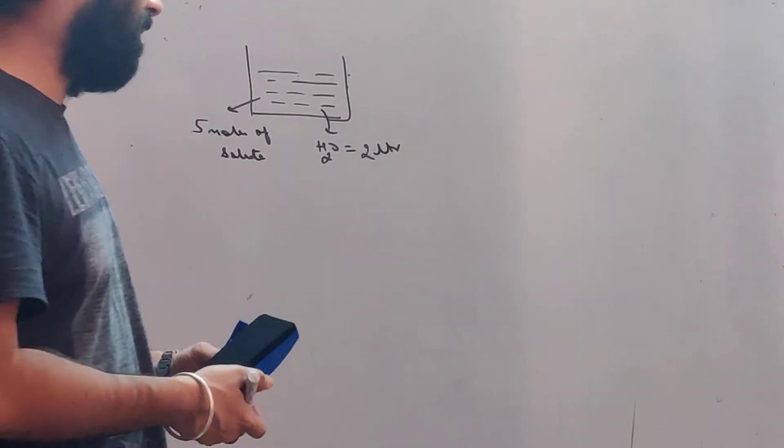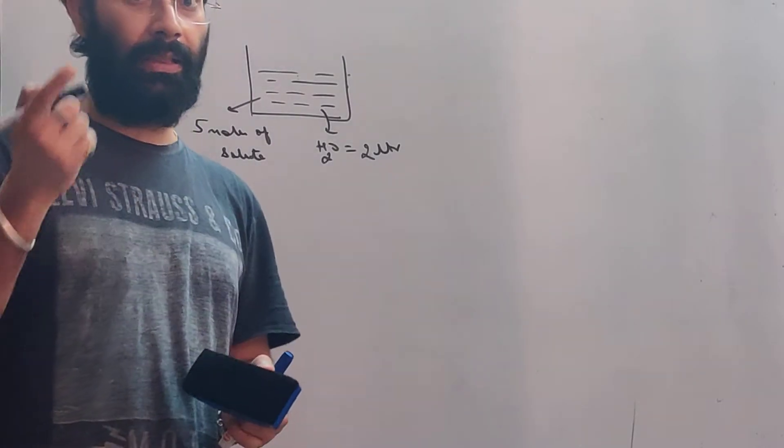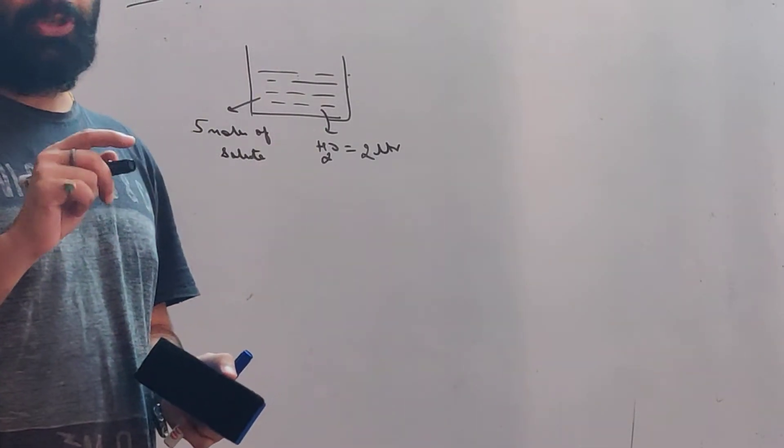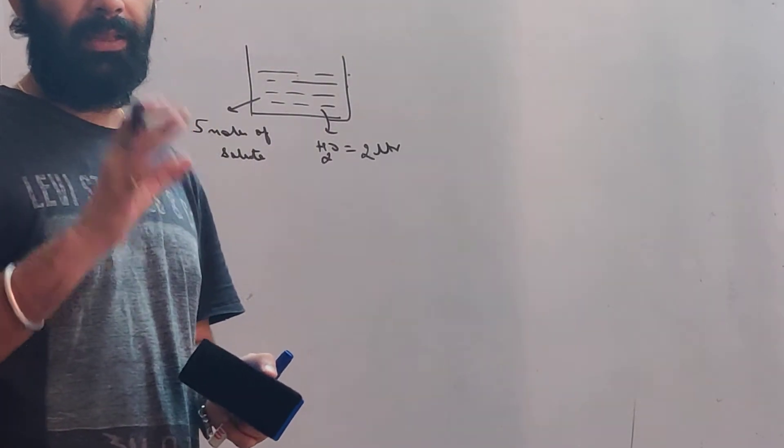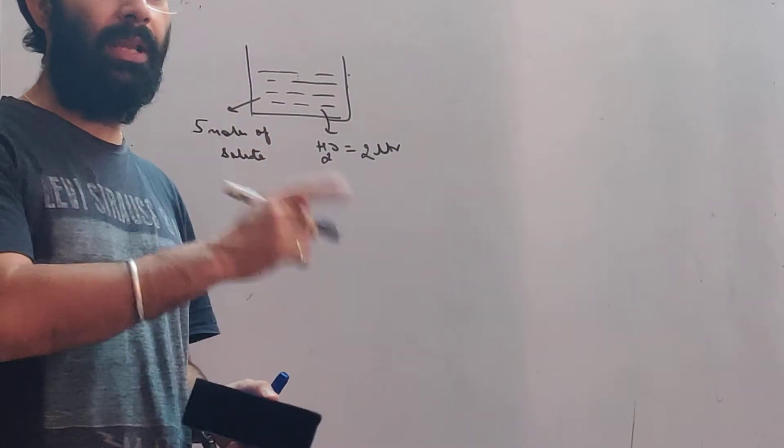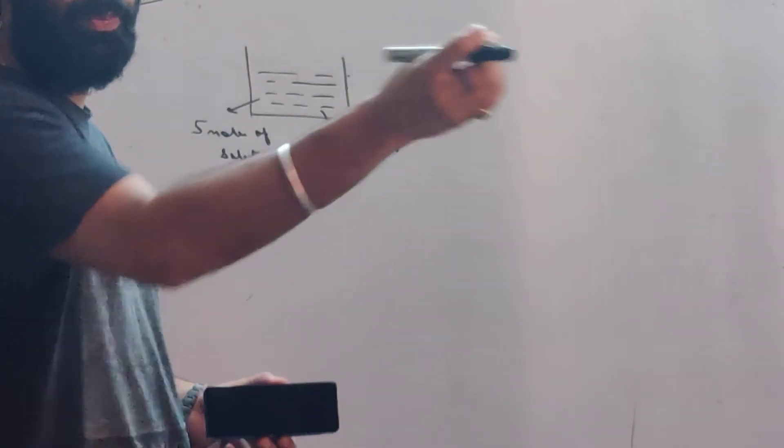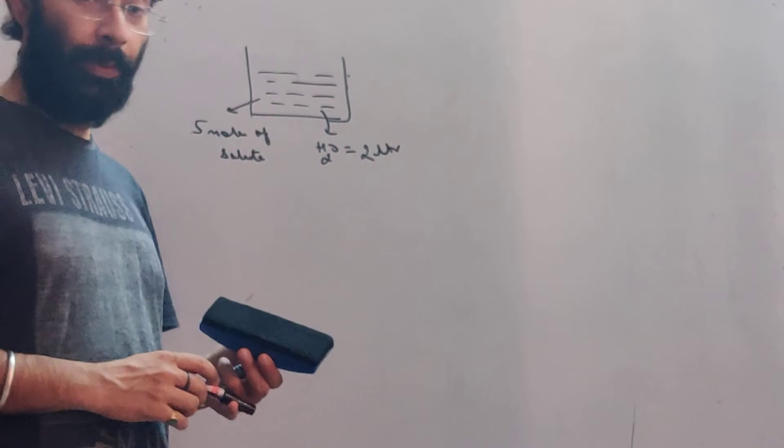When we go to petrol pump, fuel pump, we buy petrol per liter. We ask how much is the rate of petrol? It's rupees per liter. But when we take milk, we take the milk by the kilo. Generally, the milk rate is rupees per kilo. So the milk is liquid.